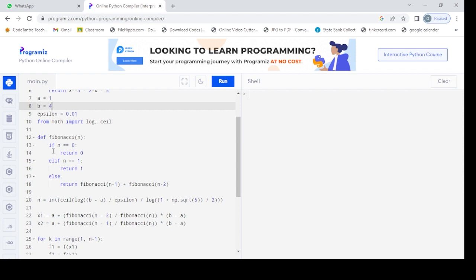Then here we are defining the Fibonacci(n). It is a recursive function. If f(0) = 0, then f(1) = 1. If n is greater than 1, Fibonacci(n-1) + Fibonacci(n-2).